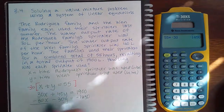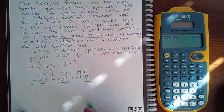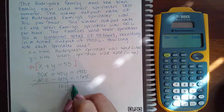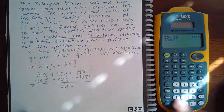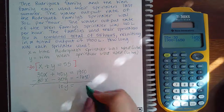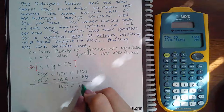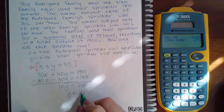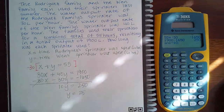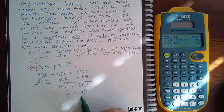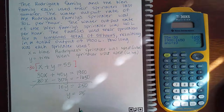When I combine these equations, the X terms will cancel. I get 10Y equal to 1,900 minus 1,650, which is 250. Then if I divide both sides by 10, I get Y equals 25. So the Wynn family used their sprinkler for 25 hours.